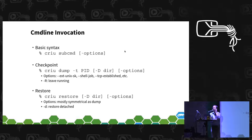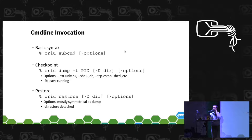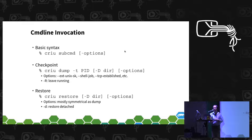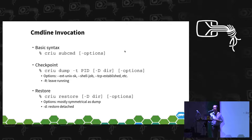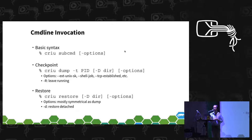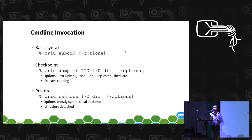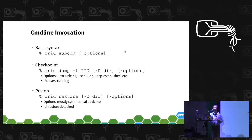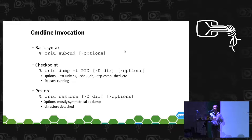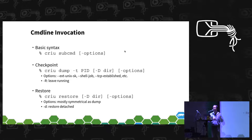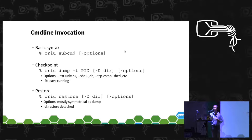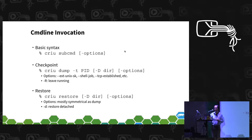The command line invocation is simple: 'criu' followed by a subcommand and options. For checkpointing (dumping), you run 'criu dump -t <PID> --dir <directory>' and additional options. Depending on the situation you may need to pass many options. For restoring, you run 'criu restore --dir <directory>' with mostly the same options as dump time, but without the process ID, because the process ID itself is restored by the restore action.